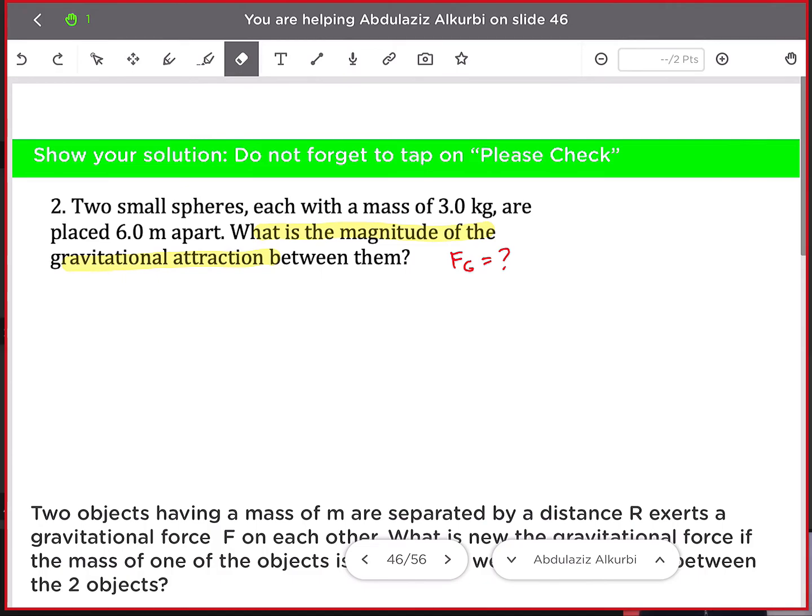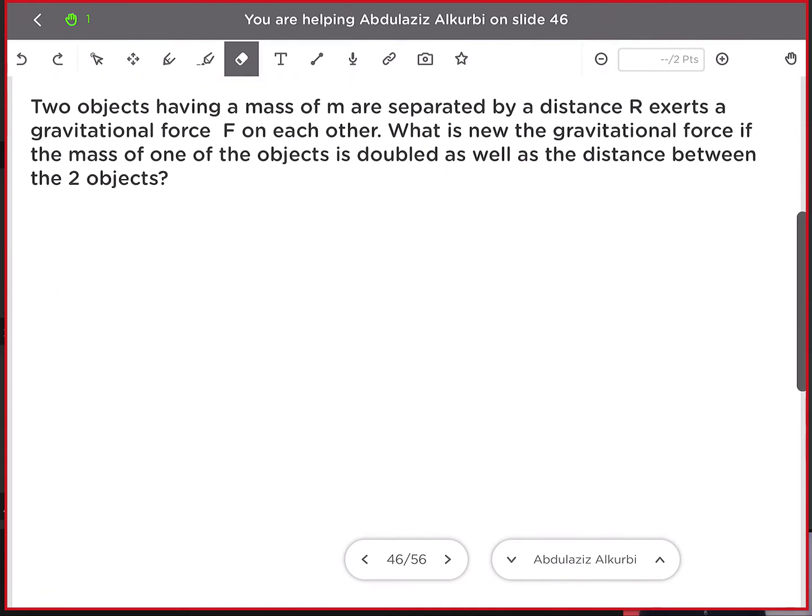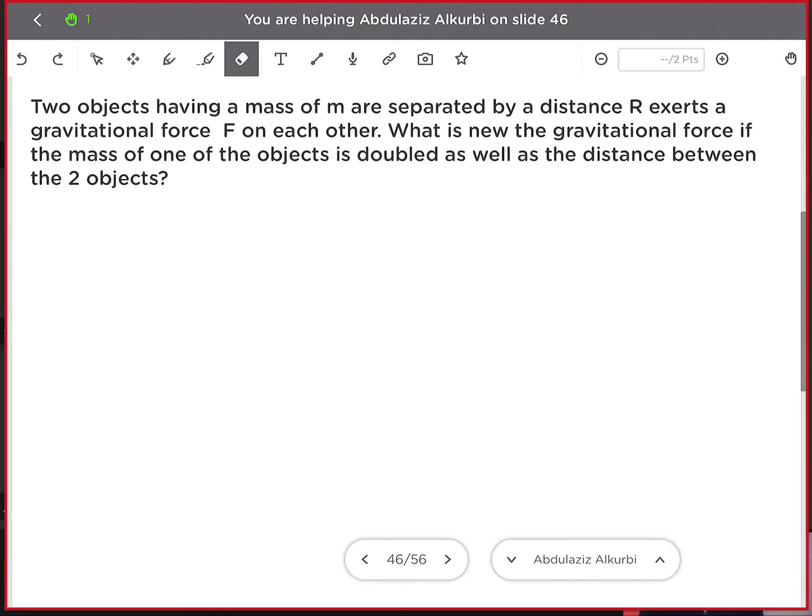The first question on slide 46 is fairly easy. However, it's the second question that I would like to give stress on. Now, it says here that two objects having a mass of M are separated by a distance R, exerts a gravitational force F on each other. What is the new gravitational force if the mass of one of the objects is doubled as well as the distance between the two objects?